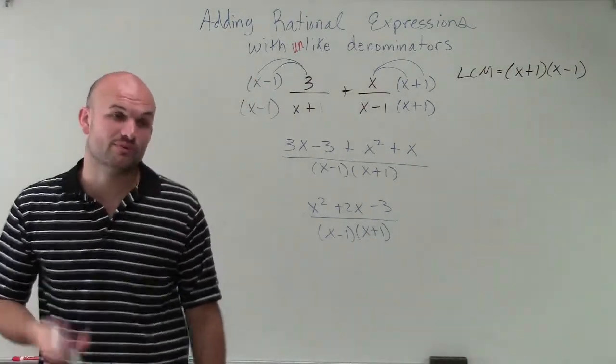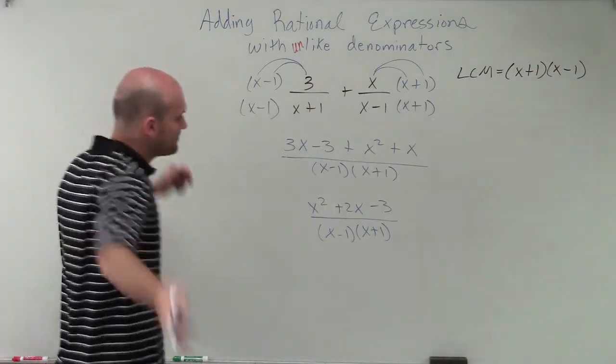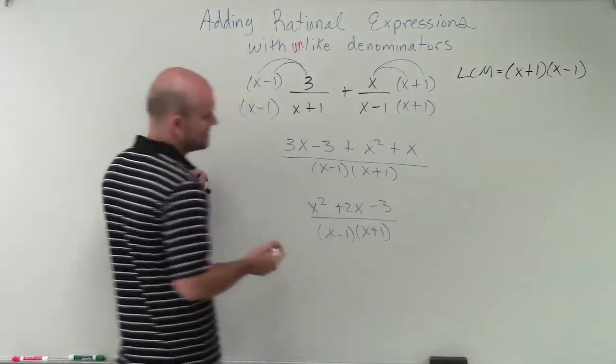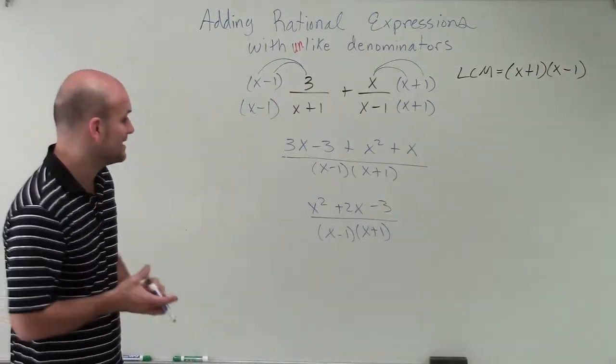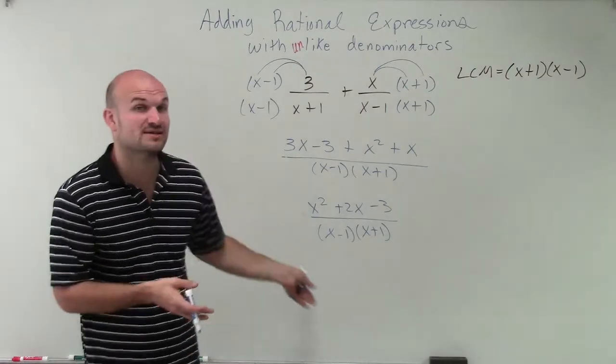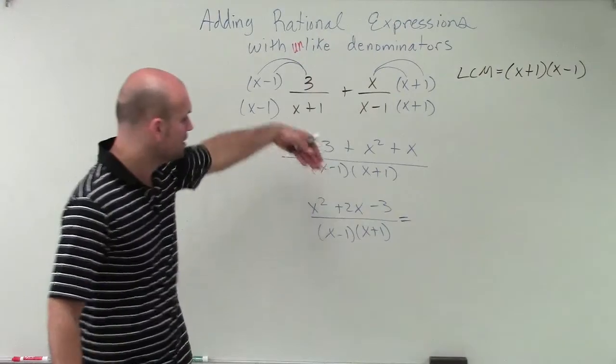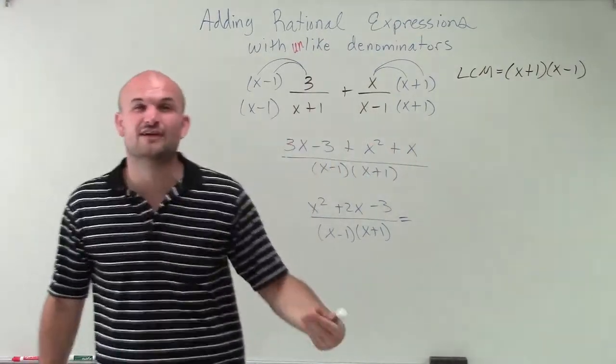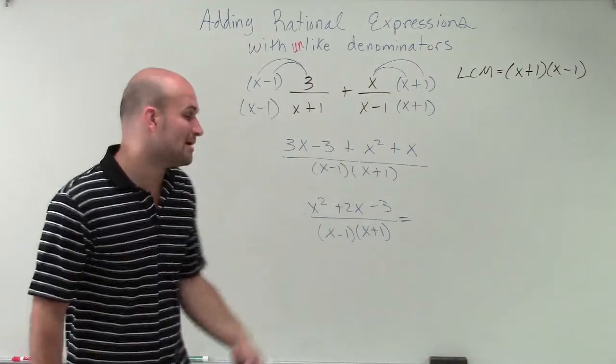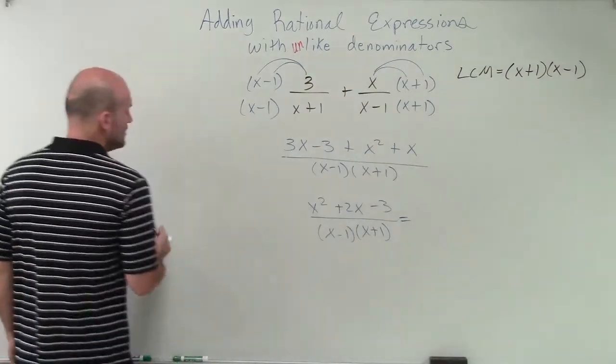Now what we need to do is make sure before we say we're done, we need to see, can we simplify this? Can I factor this times anything that's going to maybe help us simplify our answer further? So this goes back to simplifying our fractions, right? We always want to look. If there is a simplified version of our answer, we want to see if we can find it.